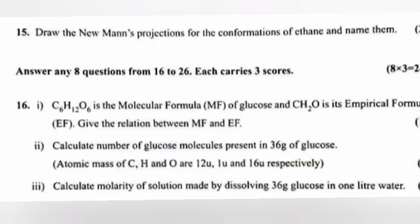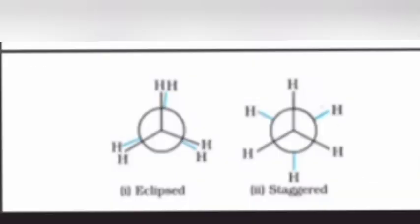Question 15: Draw the Newman's projection for the conformation of ethane and name them. Answer: 1) eclipsed, 2) staggered.